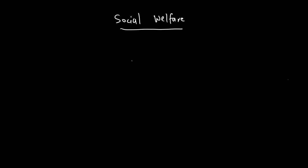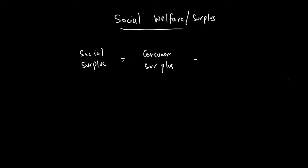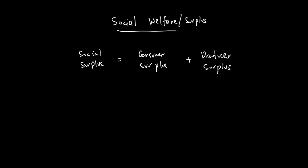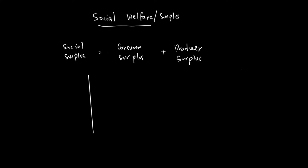In today's video we'll talk about social welfare. What is social welfare? Social welfare is simply a product of our consumer surplus and producer surplus. Social welfare, also called community welfare or social surplus, is the sum of consumer surplus and producer surplus. From a society's perspective, whenever consumer surplus and producer surplus is maximum, that is the point where social welfare is maximum.